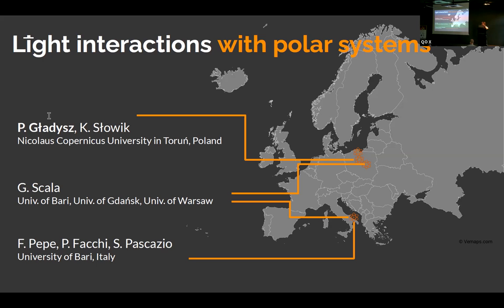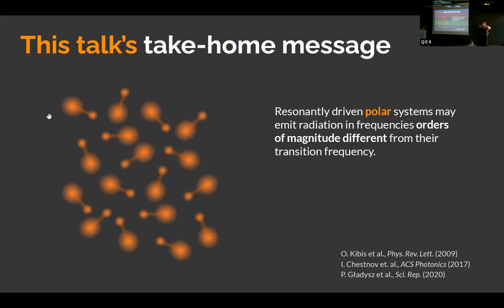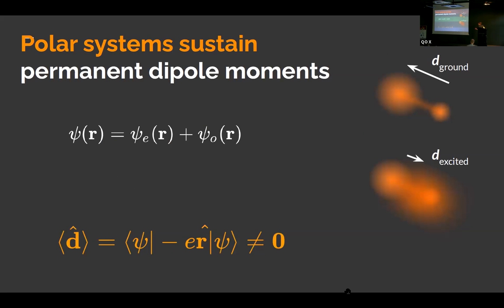And now for this project on polar quantum systems, this one is developed with a group of Saverio Pascatia in Italy, in Bari, and then with Giovanni, who is both in Bari and Warsaw and Gdańsk. So, the main message of the talk is that polar systems, as you drive them resonantly, can emit radiation, and that radiation can be at the frequency that is orders of magnitude different from the transition frequency, from the resonant transition frequency. That's the most important message. It's been investigated in different kinds of systems, and we investigated in the special system that is molecular ensembles.